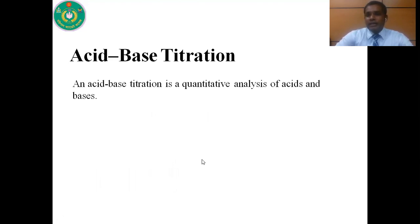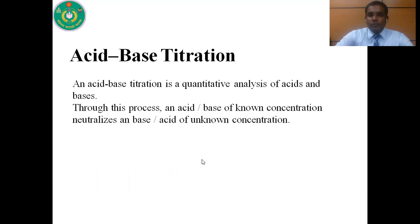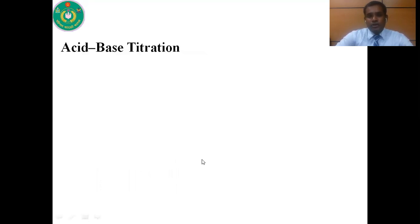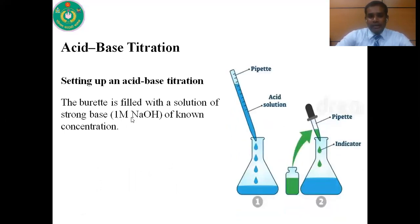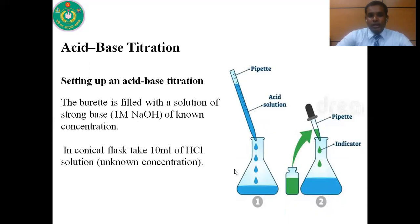Acid-base titration is a quantitative analysis of acids and bases. Through this process, an acid or base of known concentration neutralizes a base or acid of unknown concentration. The burette is first filled with a solution of a strong base — for example, 1 molar sodium hydroxide of known concentration. In the conical flask, we take 10 ml of hydrochloric acid by using a pipette. After taking hydrochloric acid in the conical flask, we add one or two drops of indicator. This indicator indicates the end point of the reaction.